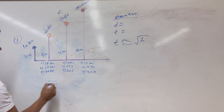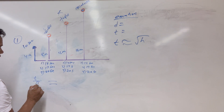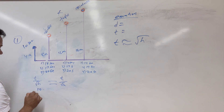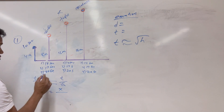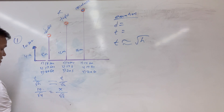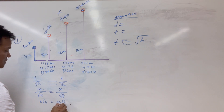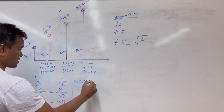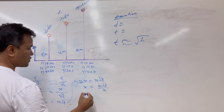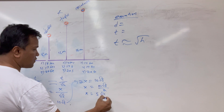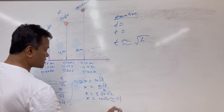You can do it by math using proportions. Time over the square root of h is constant. So: 10 over the square root of 4 equals t over the square root of 8. That gives 2x equals 10 times the square root of 8, so x equals 5 times the square root of 4 times the square root of 2, which is 10 times the square root of 2 — approximately 14 seconds.